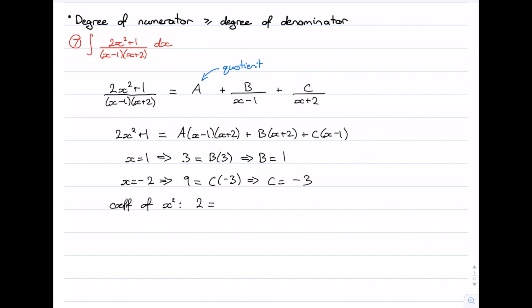On the right hand side, where does that come from? Well, it comes from A times x times x. That gives me Ax². So the coefficient is A. And there's no other place where I can get an x² from. So our value for A is just 2.